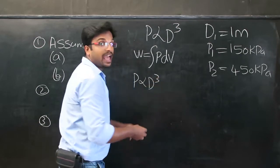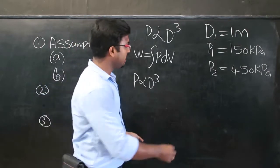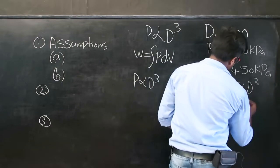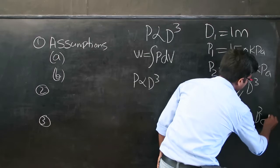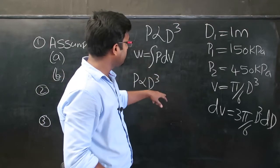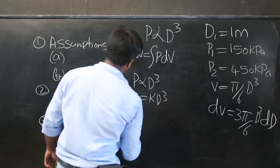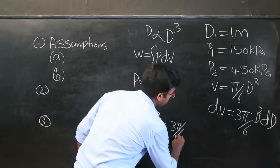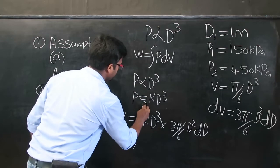We are given P ∝ D³, and we know that the volume of a sphere is V = (π/6)D³. Differentiating, dV = (3π/6)D² dD = (π/2)D² dD. Writing P = K·D³ and substituting, the work integral becomes W = ∫K·D³ · (π/2)·D² dD, integrated from D1 to D2.